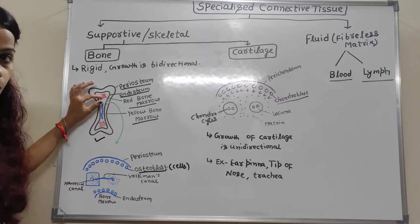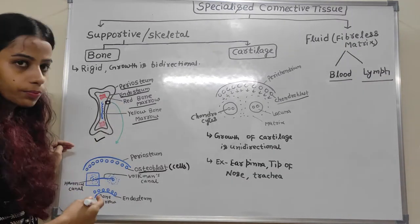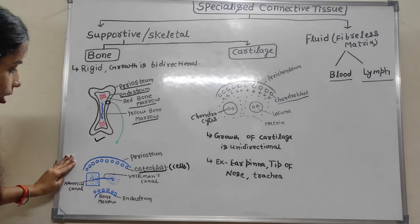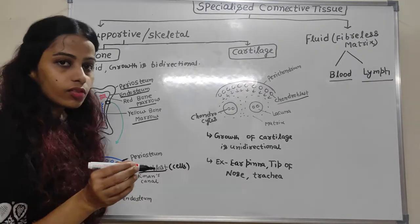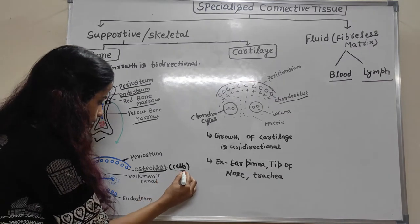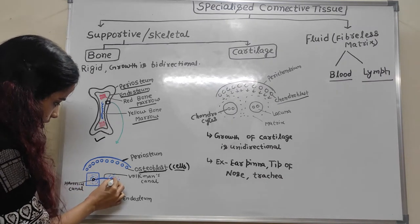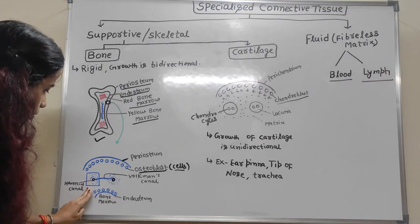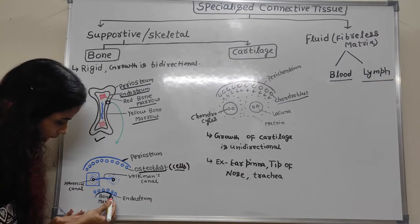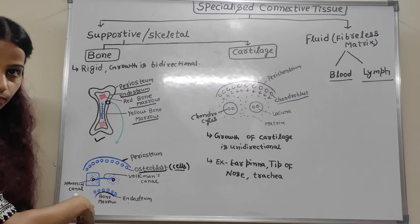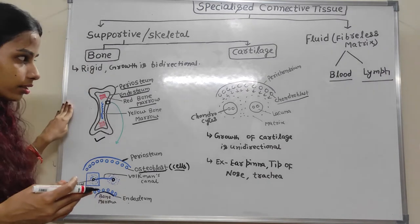If we cut a cross-section of the bone and view it under a dissecting lens, it shows the periosteum layer, followed by osteoblasts — the cells present in bones. There are Haversian canals forming ring-like structures. The canals that connect Haversian canal to Haversian canal are known as Volkmann's canals. The inner portion is the endosteum where bone marrow is formed.